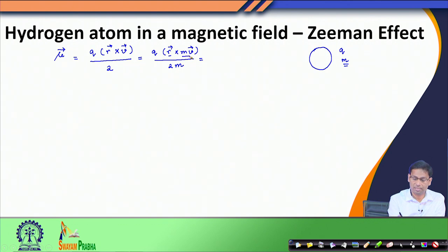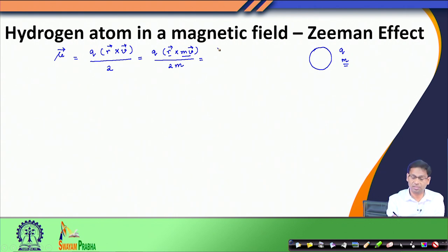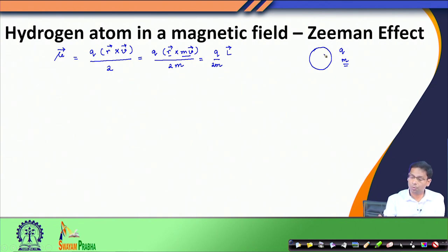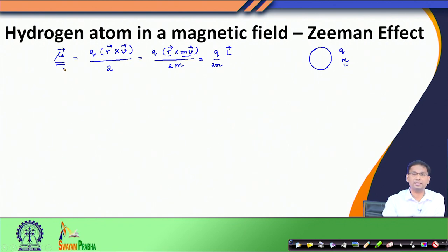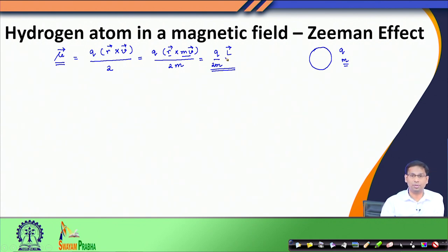If you look at this expression closely, you would see that one part is the displacement vector and the other is the linear momentum vector. The vector product of these two vectors gives the angular momentum vector, which is then multiplied by the charge and mass of the particle. So, whenever a charged particle undergoes circular motion, it develops a magnetic dipole moment given by Q divided by 2m multiplied by the angular momentum vector.